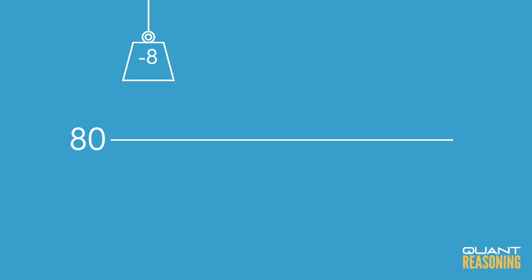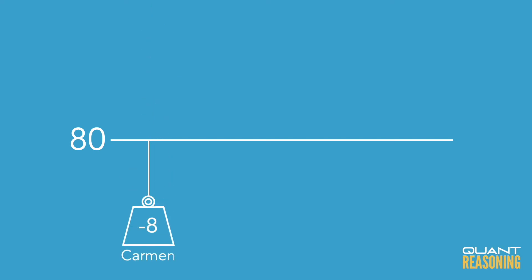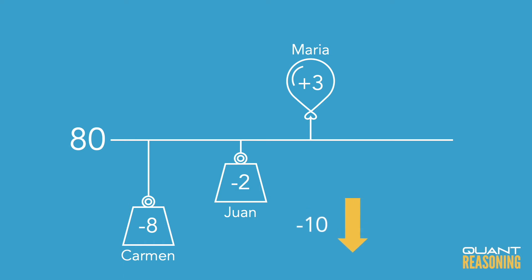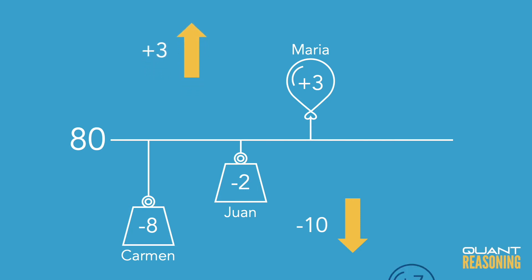In other words, the forces that are trying to pull the mean down have to match the forces trying to pull the mean up. So we have Carmen at 8 below the mean, Juan at 2 below the mean, and Maria at 3 above the mean. When we look at everything together, we have a total of 10 below — a force of 10 pulling the mean down — and only a force of 3 pulling the mean up. That means the missing point has to be exactly 7 above the mean, and so our answer is 87.